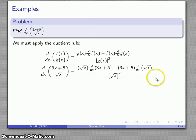I haven't actually differentiated yet. I still need to find the derivative of 3x + 5 and the derivative of √x. The derivative of 3x + 5 is 3. The derivative of √x—remember this is x^(1/2)—so the derivative is (1/2)x^(-1/2).